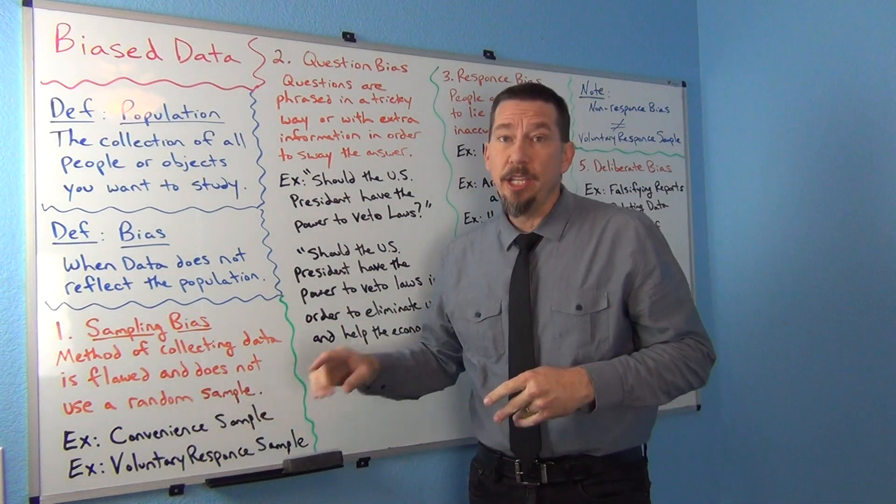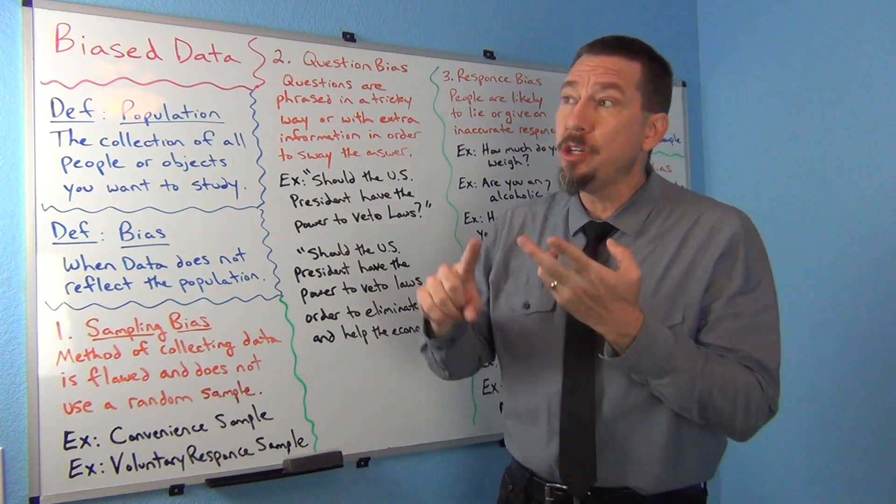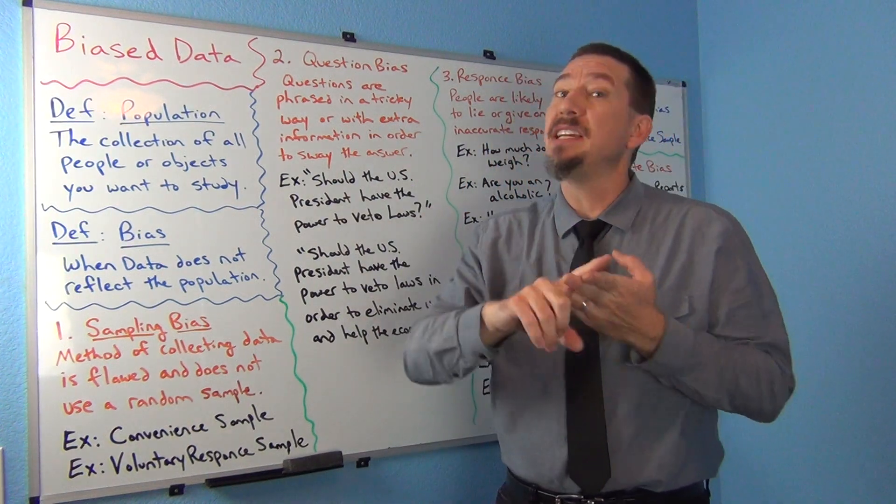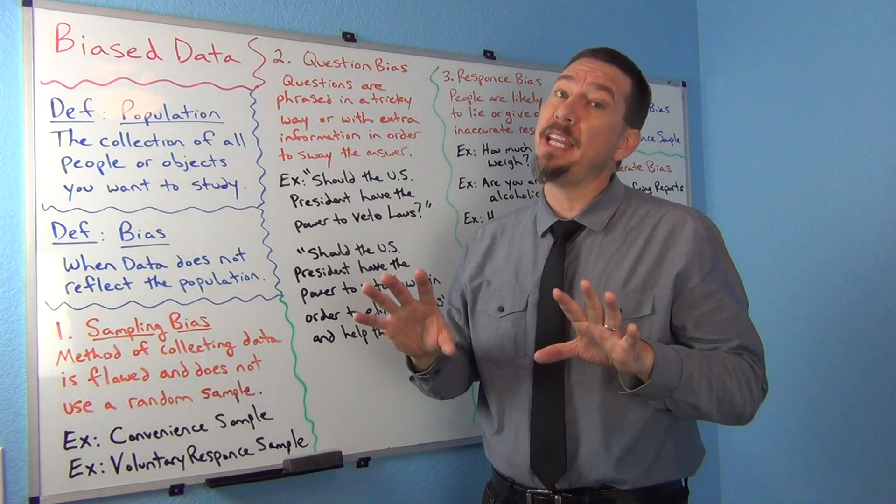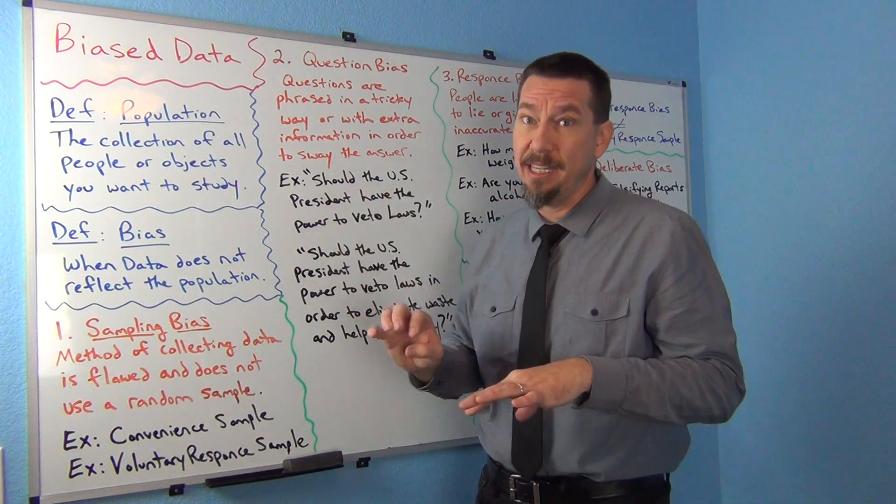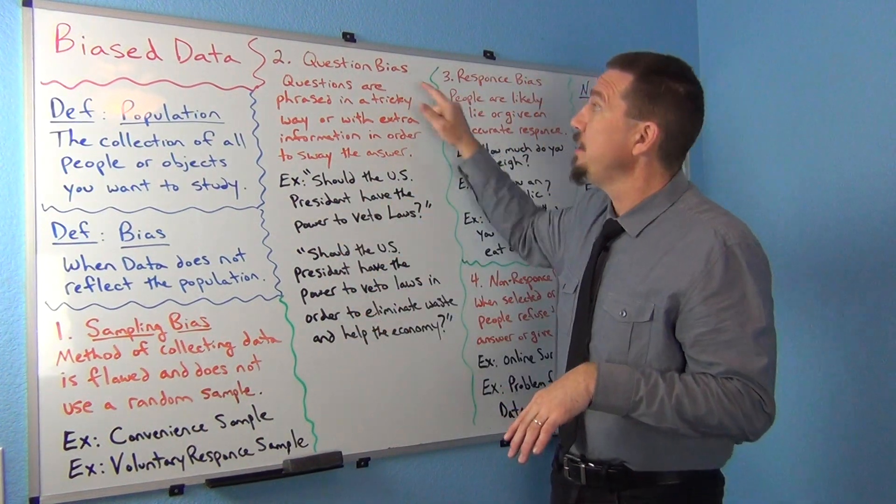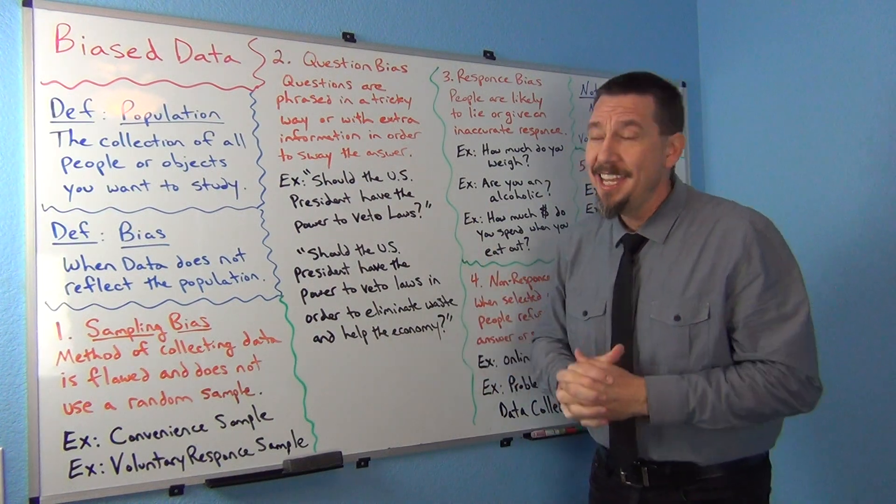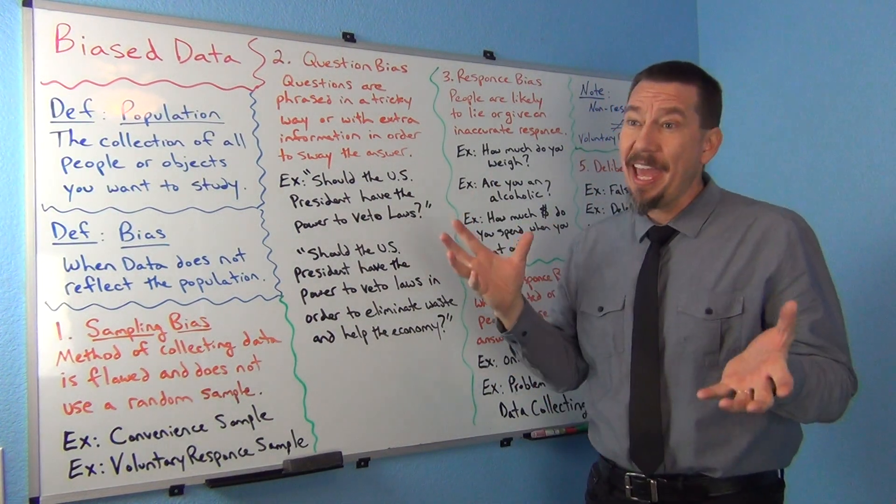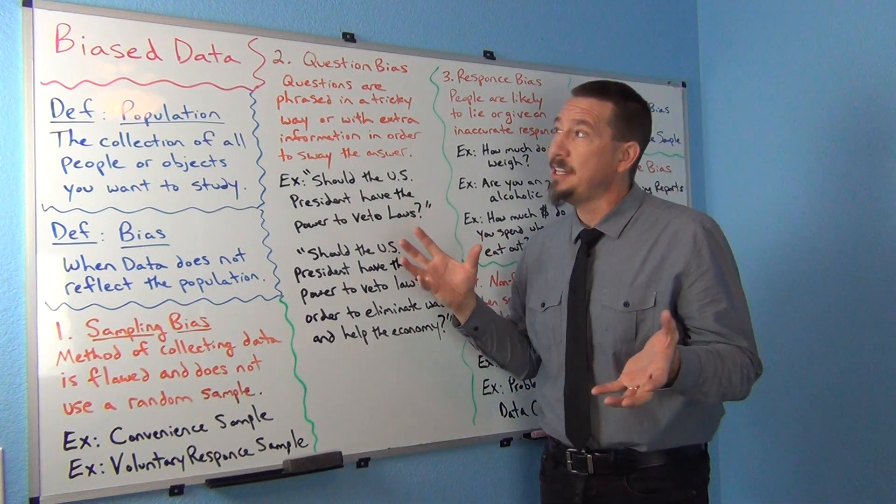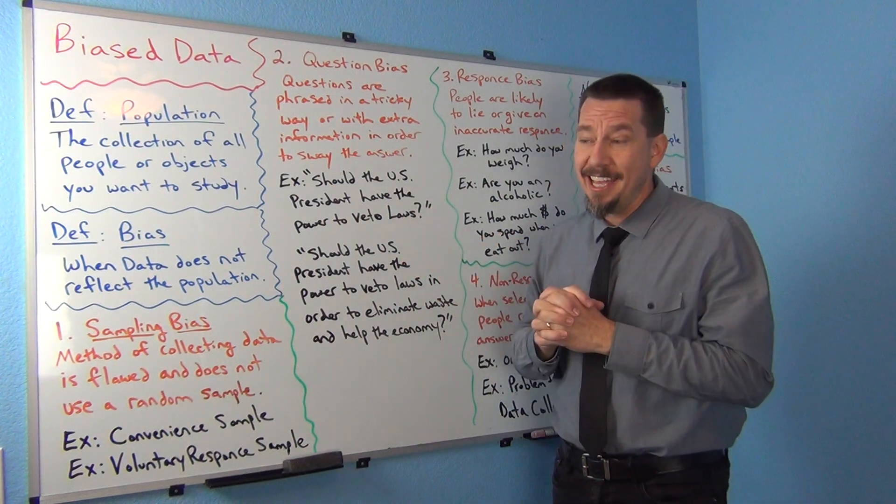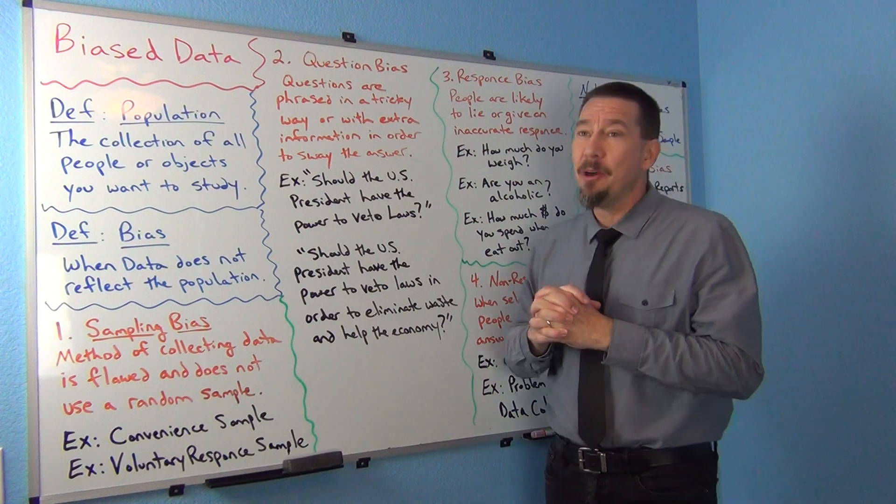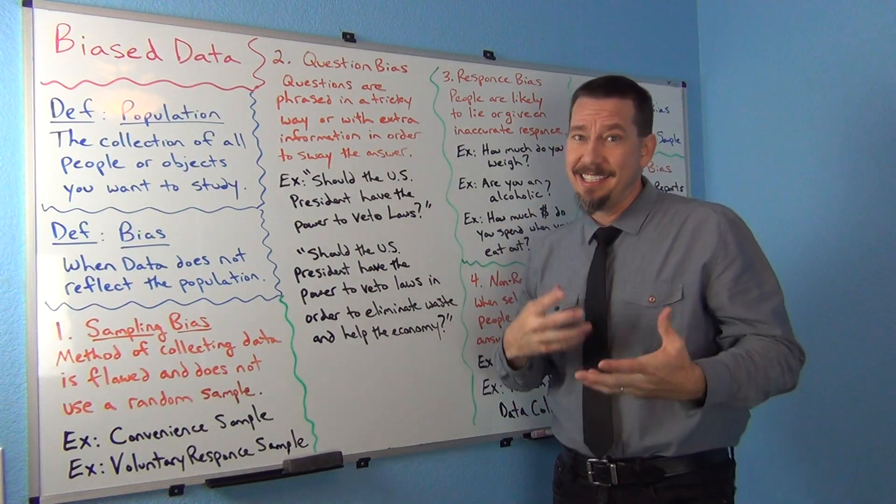But that's not the only way. You could have a great random sample. You could have a census and the data is messed up. So now we're getting into some other ways that people mess up data. Our next type of bias is called question bias. We're getting into a little bit of ethics, really. A lot of this stuff really is ethics.